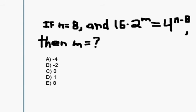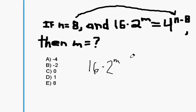Welcome back. Let's do this question here. If n equals 8, and 16 times 2^m equals 4 to the n minus 8, the first thing we want to do is pop in this n equals 8. So I'm going to rewrite: 16 times 2 to the m equals 4 to the 8 minus 8, which is 0.